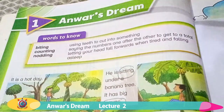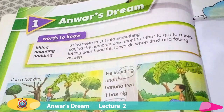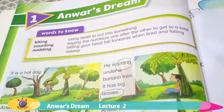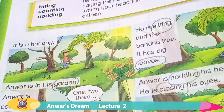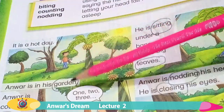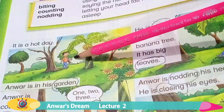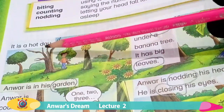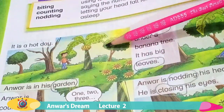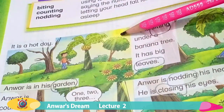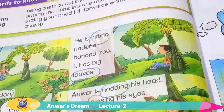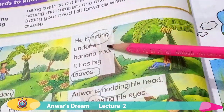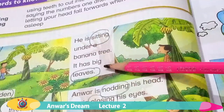Students, this is Unit 1: Anwar's Dream. Let's recall our lecture. We have studied that he is Anwar and he is in his garden. It is a hot day. This is the sun. He is sitting under a banana tree. It has big leaves.